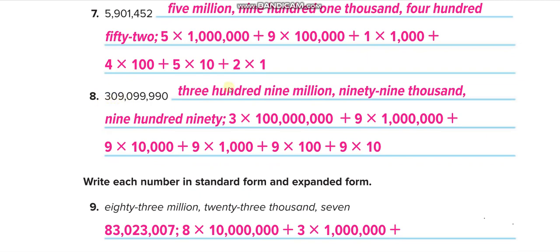The next number: three hundred nine million, ninety-nine thousand, nine hundred ninety. We read it as: three hundred nine million — that is the millions period — ninety-nine thousand — thousands period — and nine hundred ninety with no period name since it is the ones period. Expanded form: three times hundred million, nine times one million, nine times ten thousand, nine times one thousand, nine times one hundred, nine times ten.